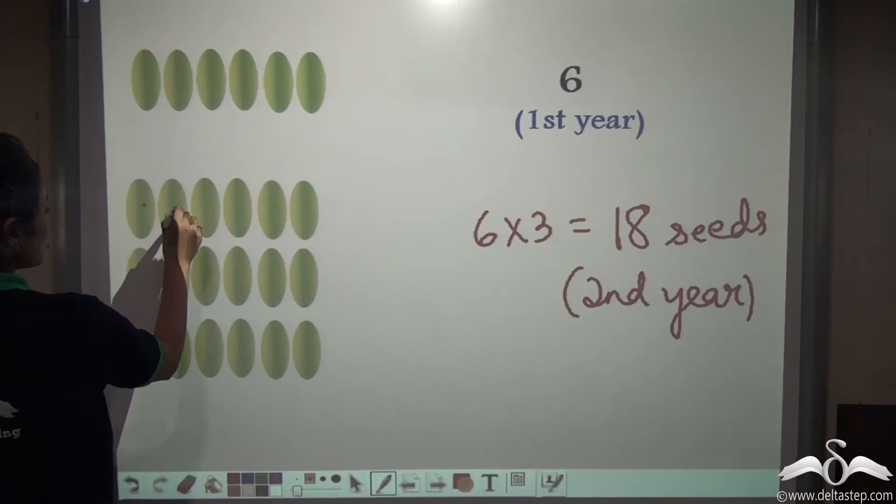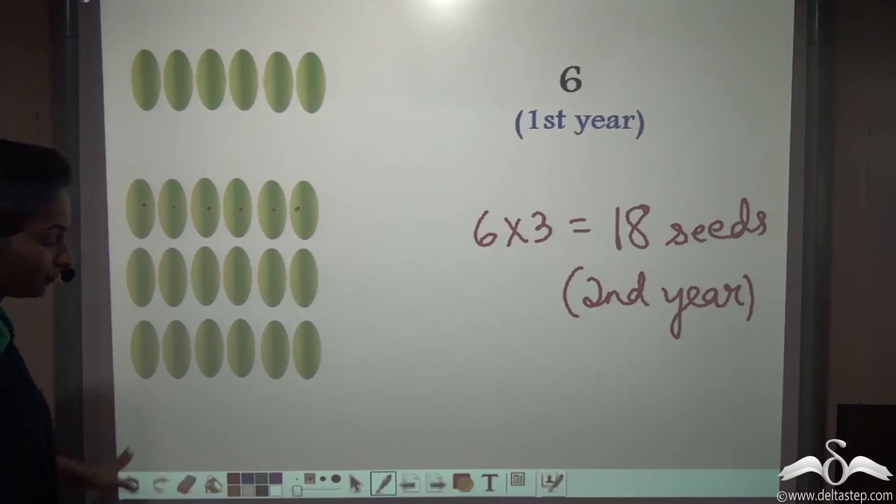You can see that. Count and check yourself. 1, 2, 3, 4, 5, 6 and 6 into 3 that is 18.